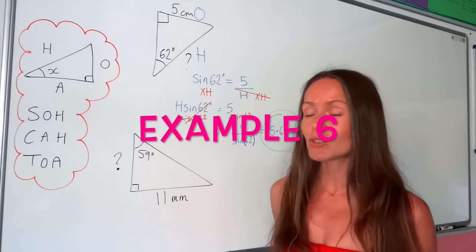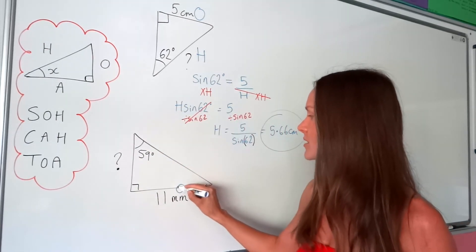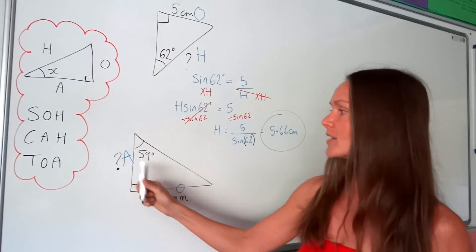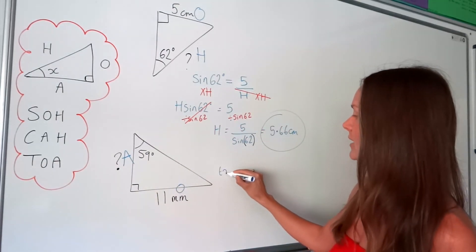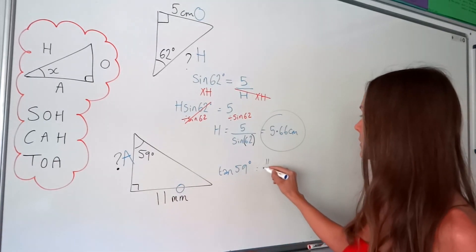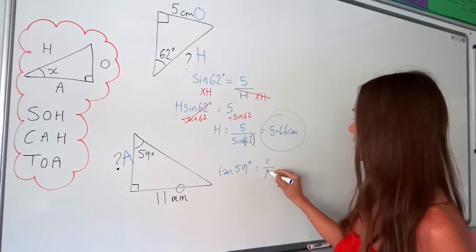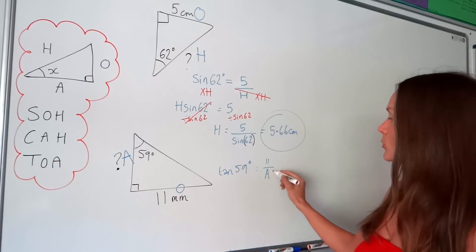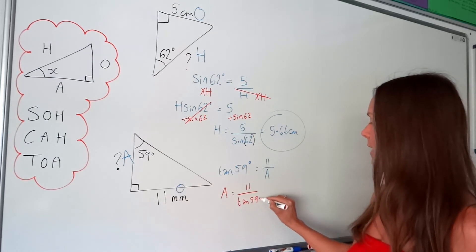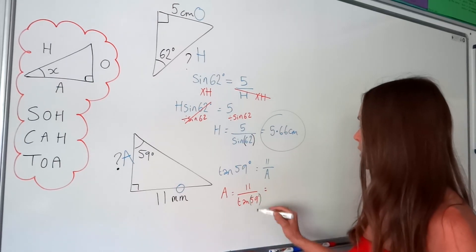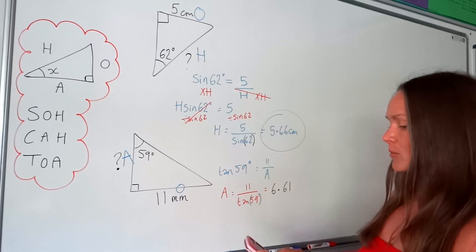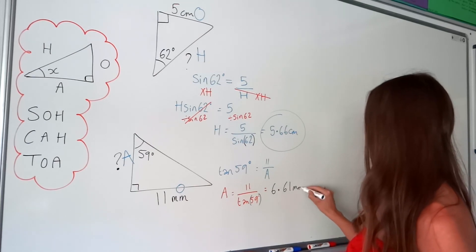The last one. Label the two sides: this one over here is opposite the angle 59, and this one is against the angle 59, so this is the adjacent. Using opposite and adjacent, we're using tan. Write down tan followed by the angle, which is 59, equals opposite divided by adjacent. Opposite is 11. Adjacent is the one we don't know, so we leave that as A. Using the quick trick — when you don't know the denominator, those just switch places — we have A equals 11 over tan 59. Put that in the calculator, closing the brackets if you use the fraction button. Rounding to three significant figures, I get 6.61, and the units are in millimetres.